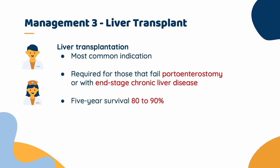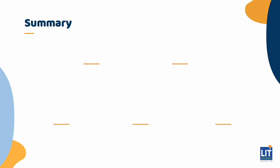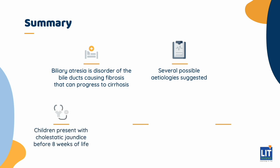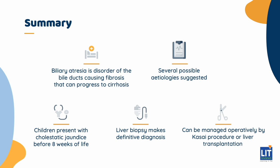The 5-year survival of children who undergo transplantation is 80-90%. In summary, biliary atresia is a disorder of the bile ducts that causes fibrosis and can eventually progress to cirrhosis. Several possible etiologies are suggested and the etiology is likely multifactorial in nature. Children present with cholestatic jaundice before 8 weeks of life. Liver biopsy makes a definitive diagnosis and it can be managed operatively by the Kasai procedure or liver transplantation.